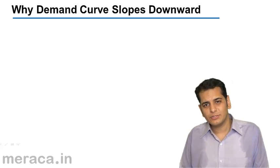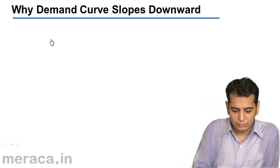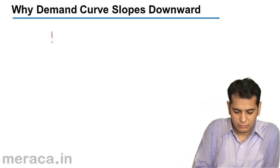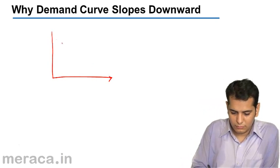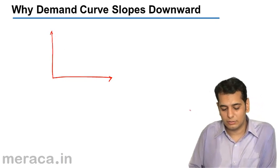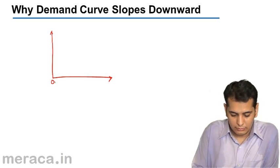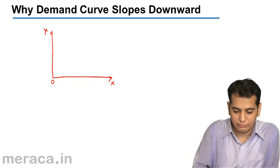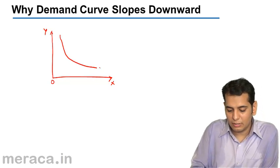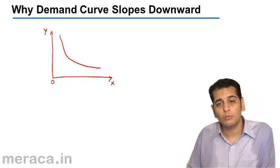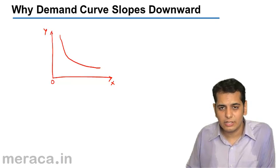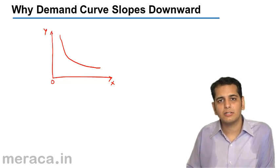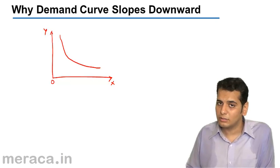In both the cases, we've seen that the demand curve slopes downward. Now, if this is the axis, we've seen that the demand curve slopes downward. Let's understand why the demand curve slopes downward.